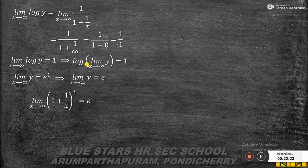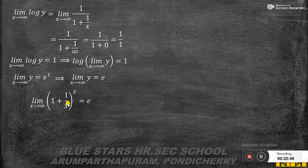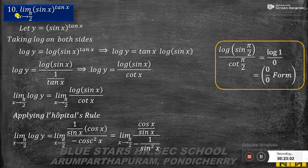Writing log outside: log of [limit x tends to infinity of y] = 1. Taking exponential on both sides (e and log cancel): limit x tends to infinity of y = e^1 = e. Substituting y = (1 + 1/x)^x: limit x tends to infinity of (1 + 1/x)^x equals e.